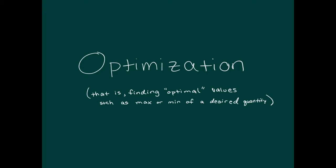In this video we're going to cover optimization. The biggest difference between optimization and related rates is that in related rates things were changing over time — triangles expanding, people riding bicycles, ladders falling from buildings. In optimization, nothing is changing over time. Instead we're looking at some setup like area, volume, or cost, and we want the most optimal value — meaning max or min — given the variables in the problem.